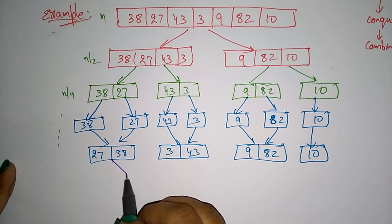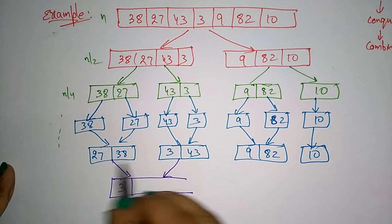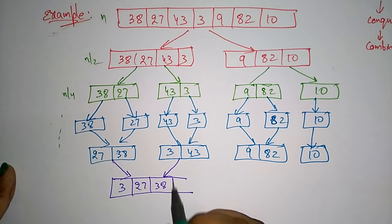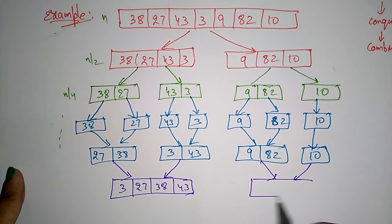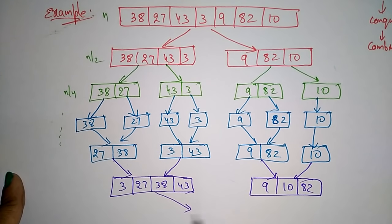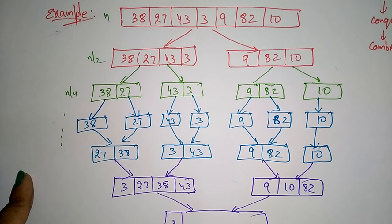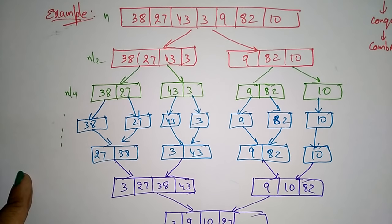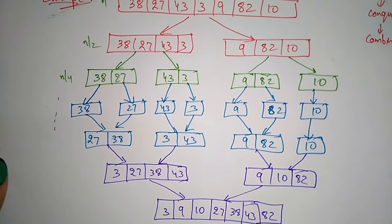Now I merge these two sub-arrays: 27, 38 merged with 3, 43 gives 3, 27, 38, 43. Again merge these two sub-arrays: 9, 10, 82. Again merge these two arrays by sorting. The final sorted list is: 3, 9, 10, 27, 38, 43, 82.